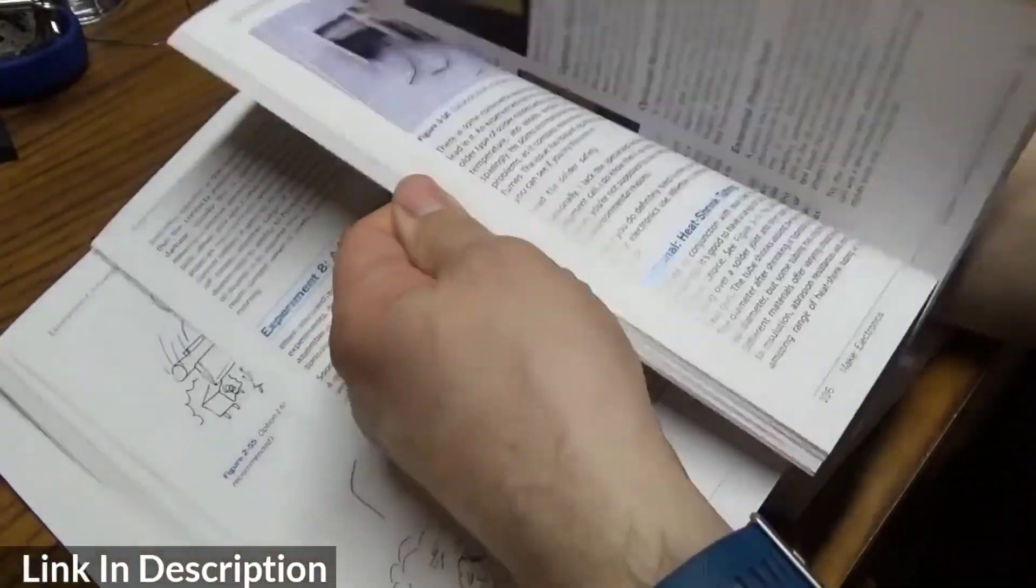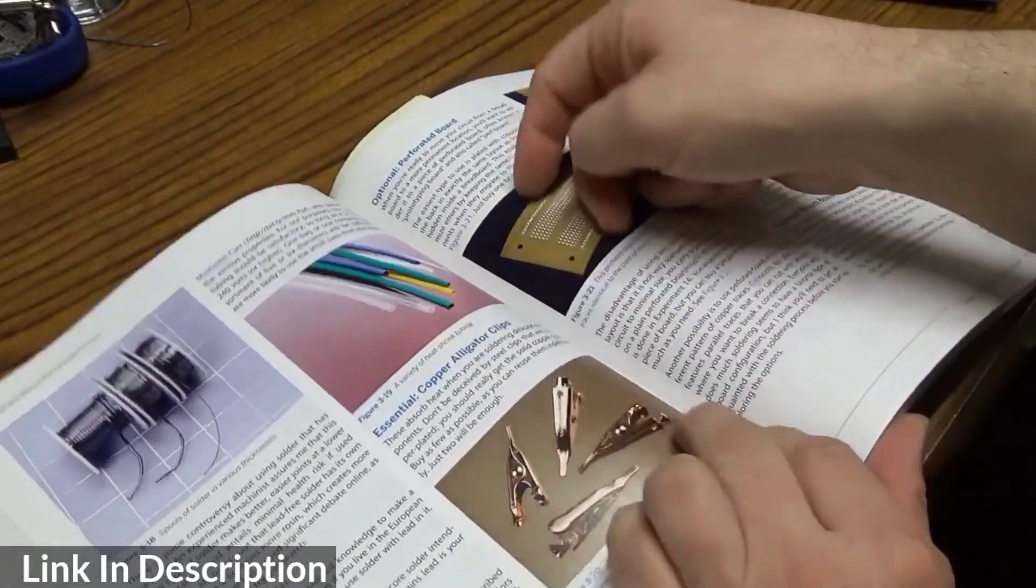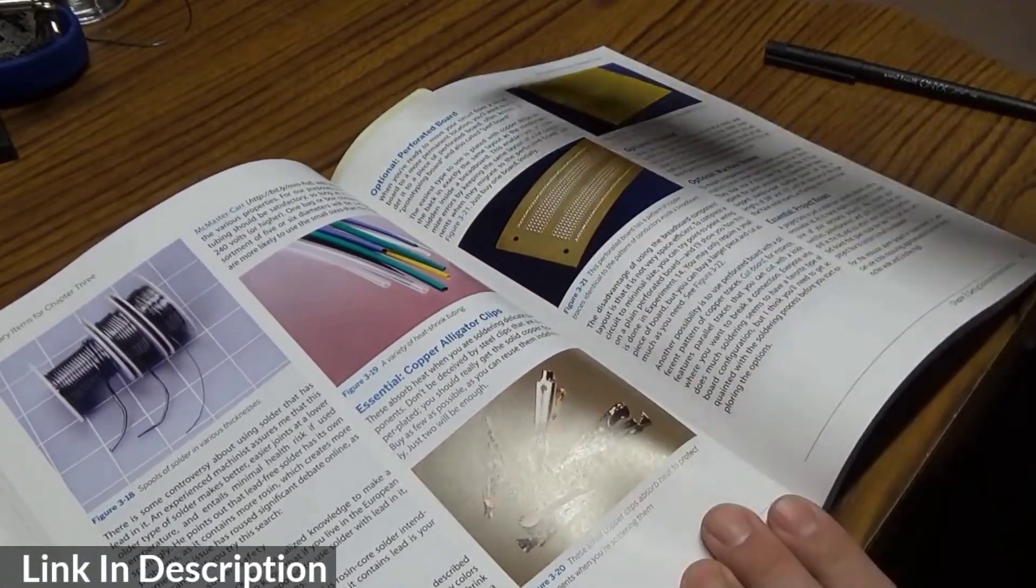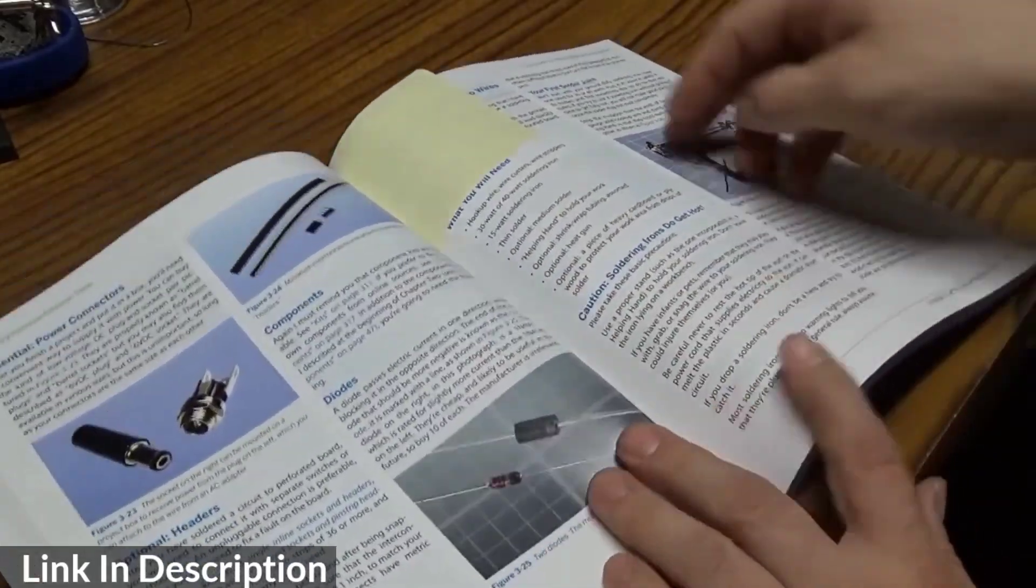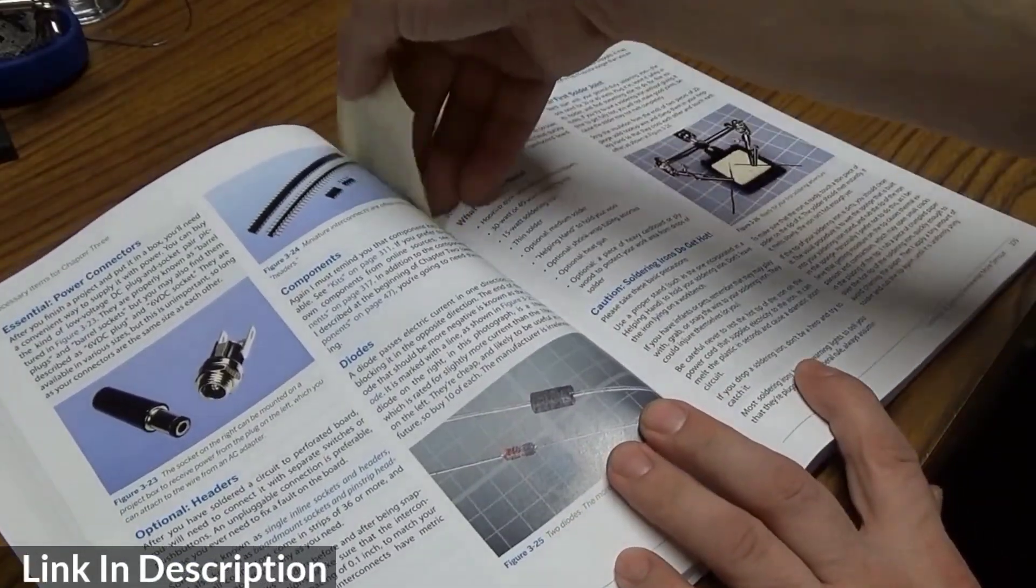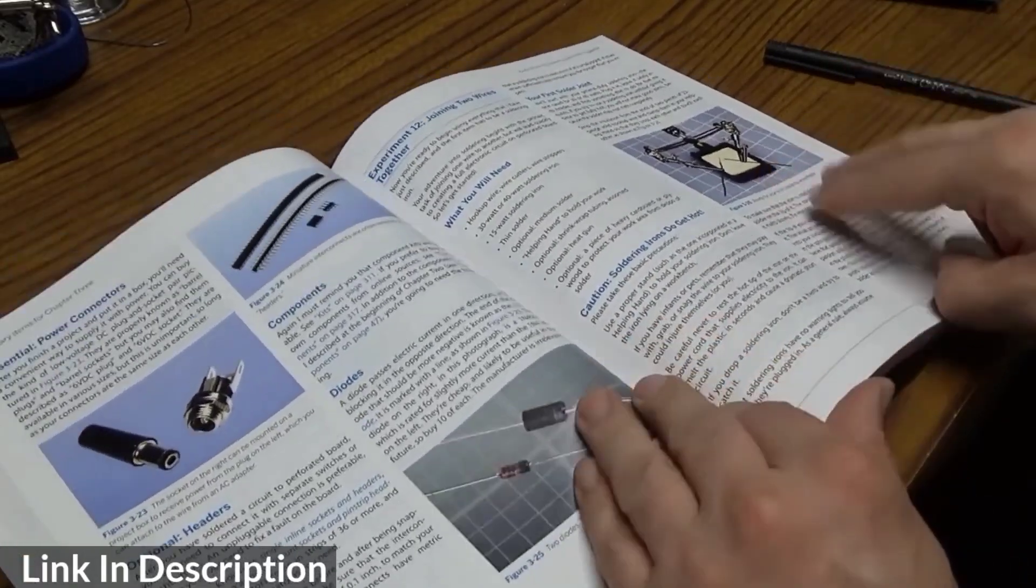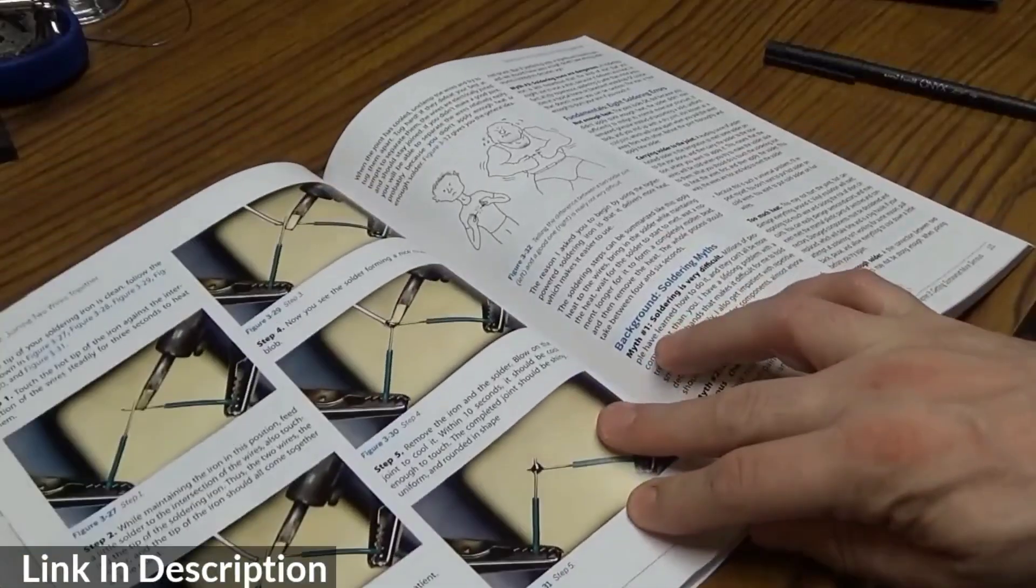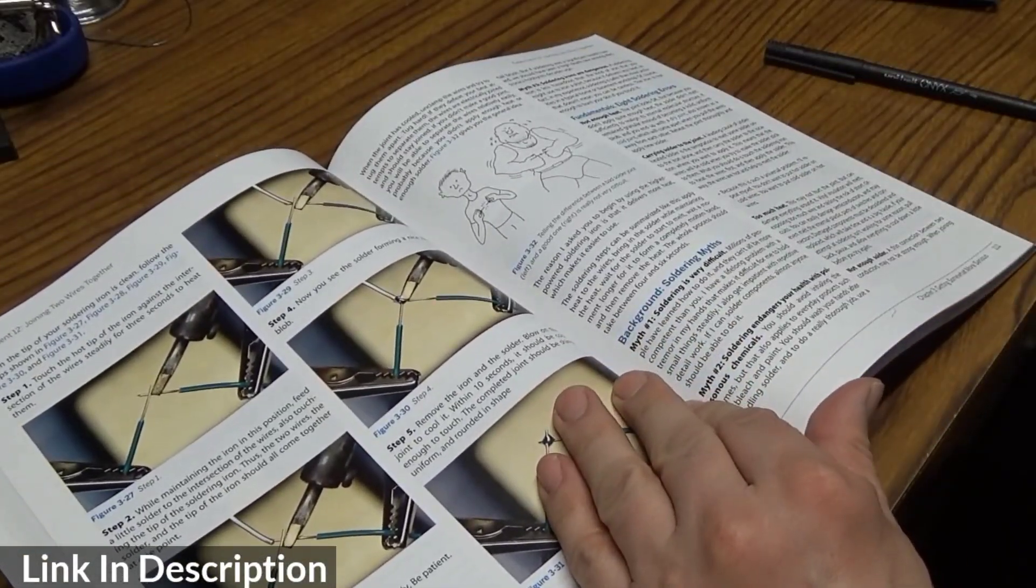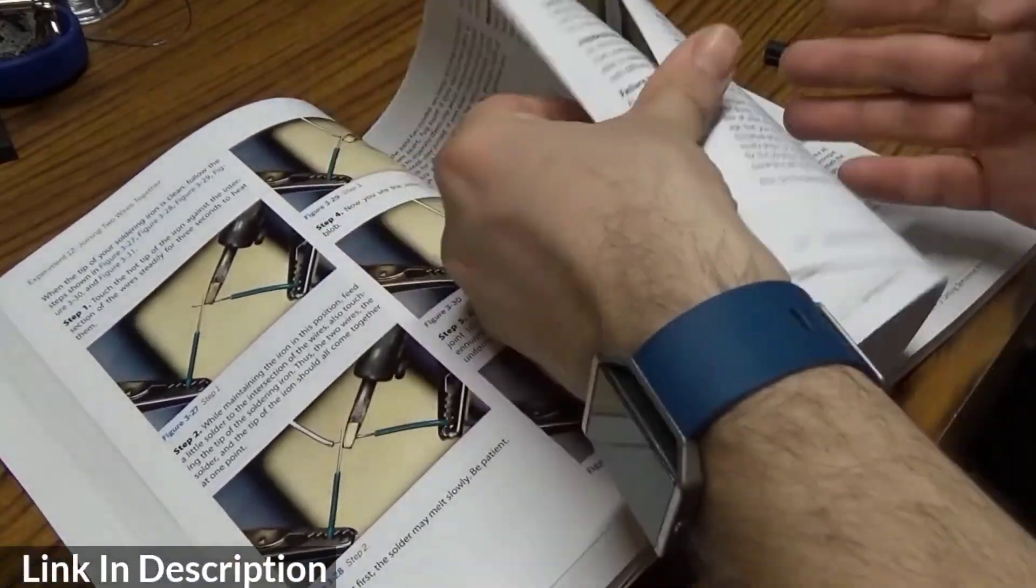Going through the book, they have perforated boards, shrink wrap, copper alligator clips and why they're good. They even go into primers about using soldering irons, how to solder wires together, and how to know a good solder joint from a bad solder joint.